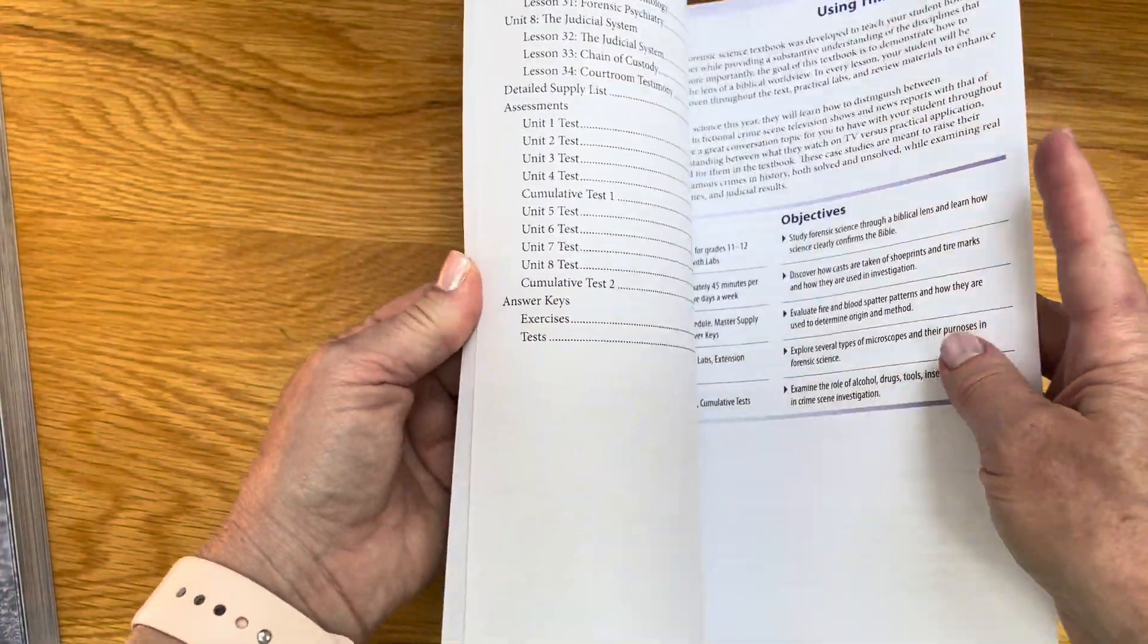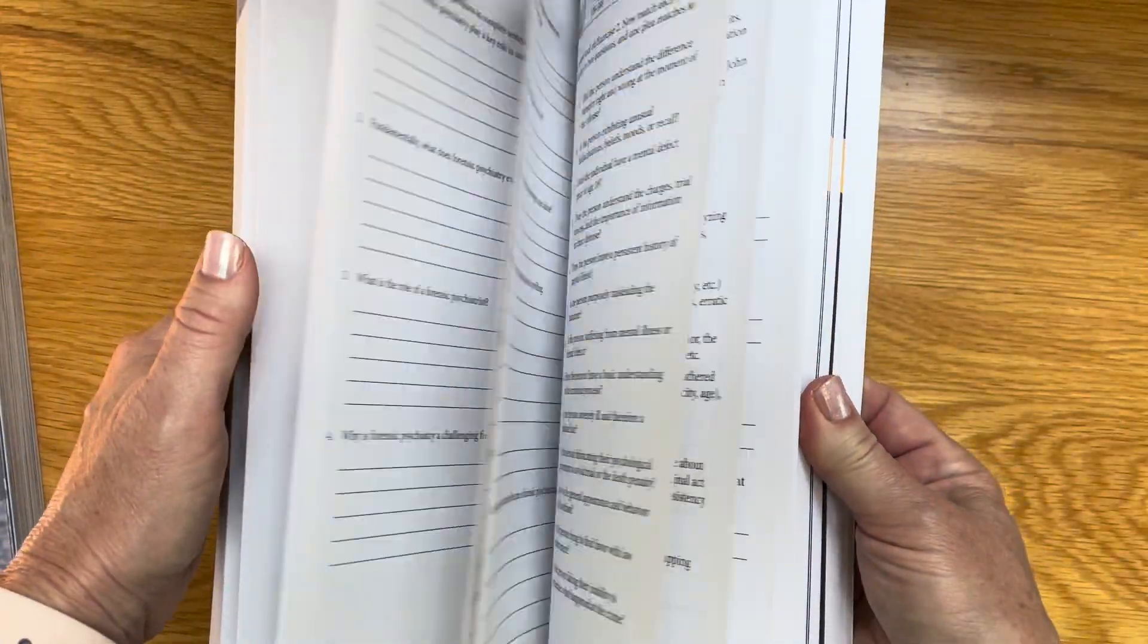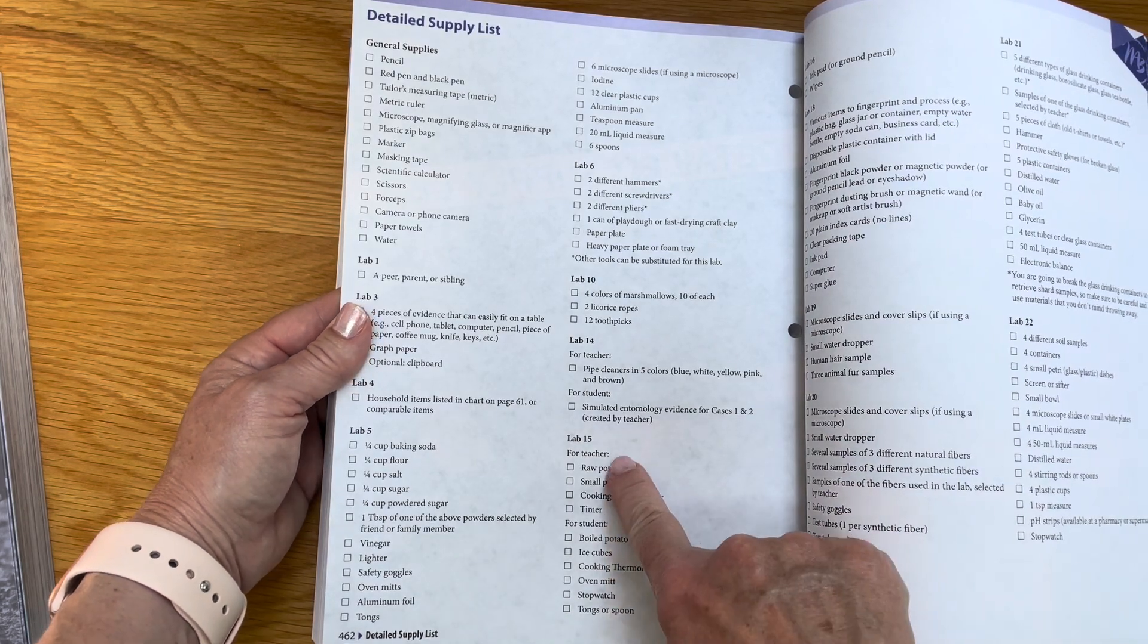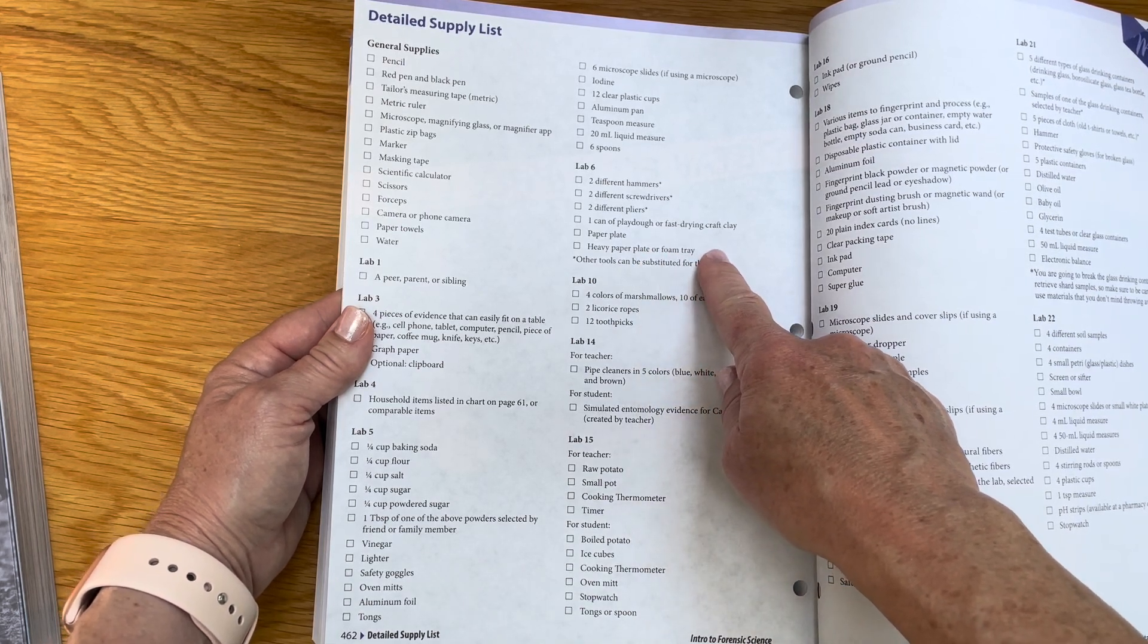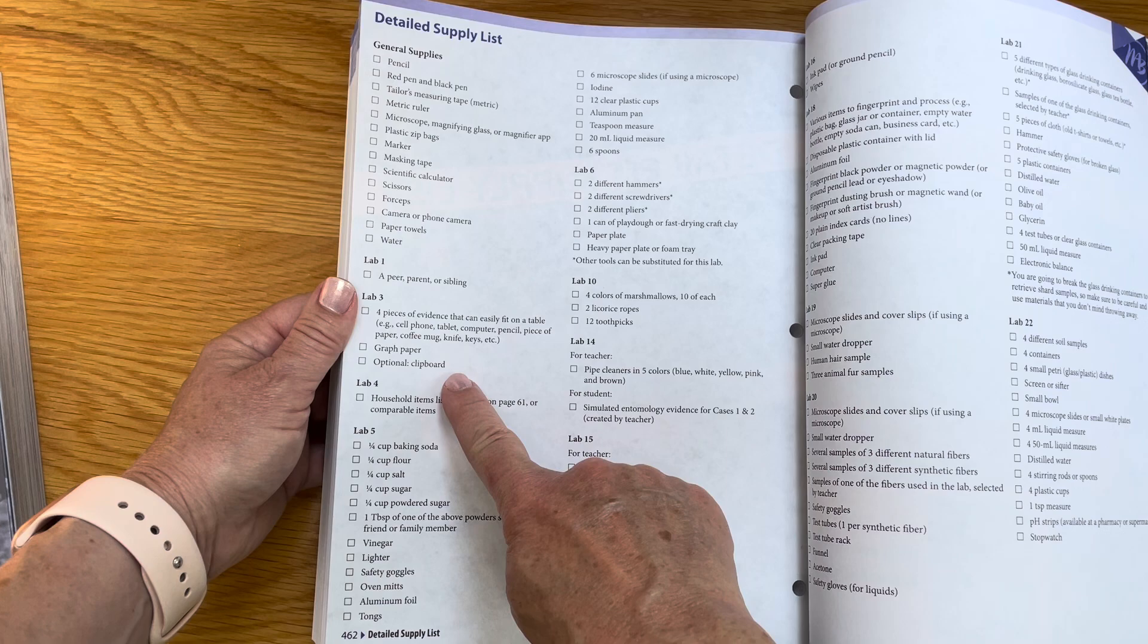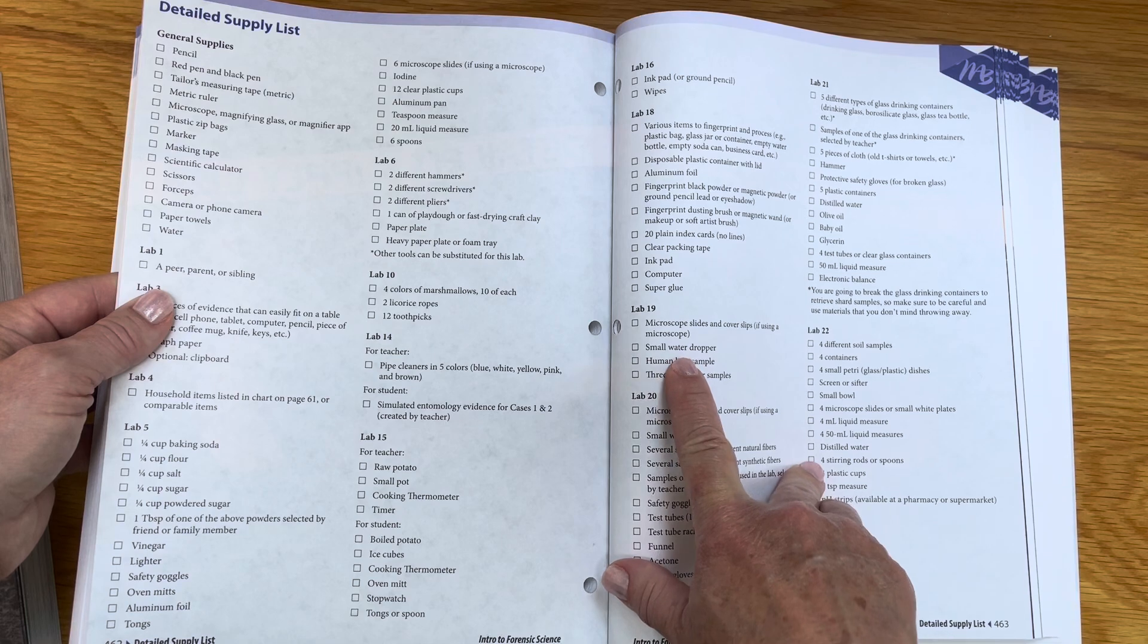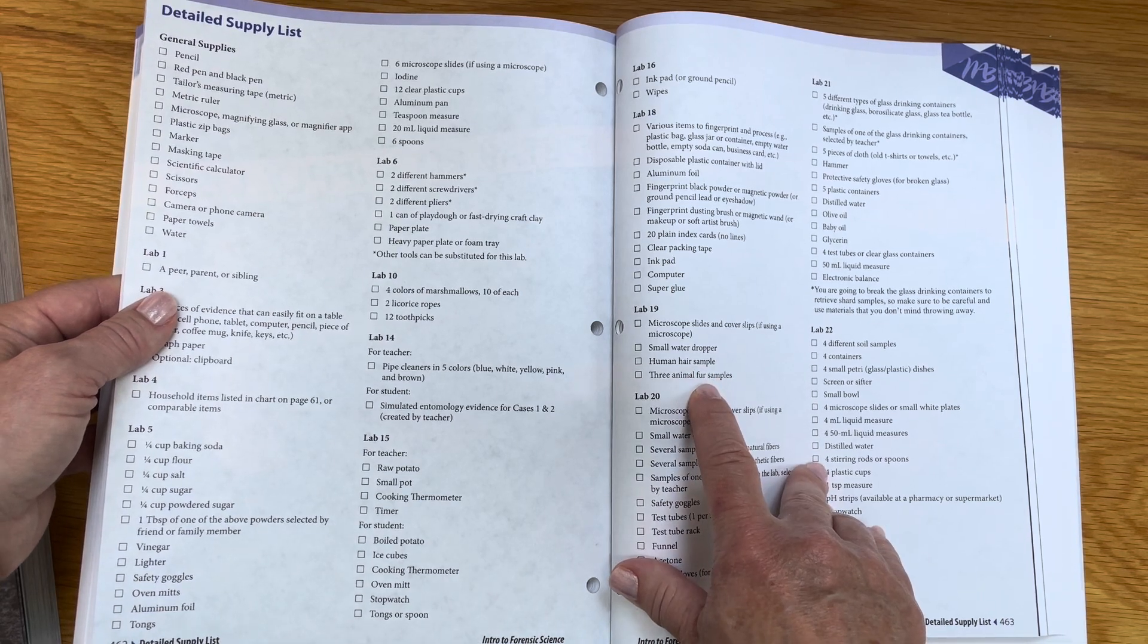There is a detailed supply list on page 461 that I wanted to show you, just so you have an idea of what some of the materials are that you'd need for this curriculum. Just flipping through to see if there's some unusual things. Most of the stuff doesn't look like it's too unusual or difficult to find. They do say to use a microscope if you can. A lot of this actually could just be done from home. Look, this one with microscope slides and cover slips, you just use a human hair sample and three animal fur samples.